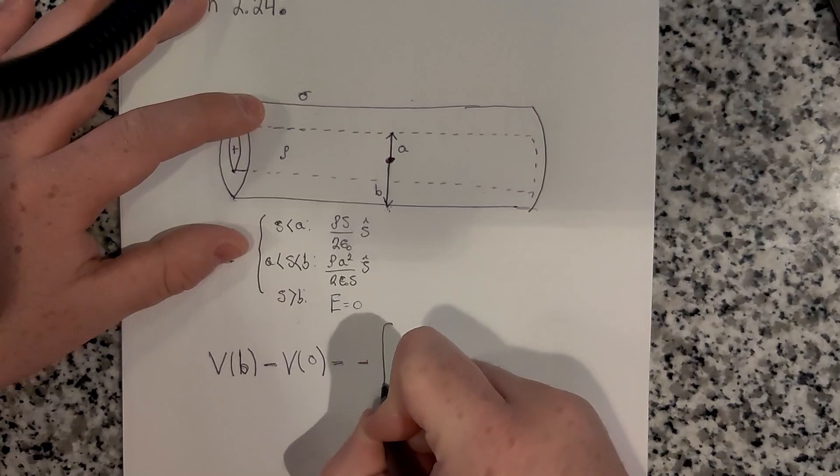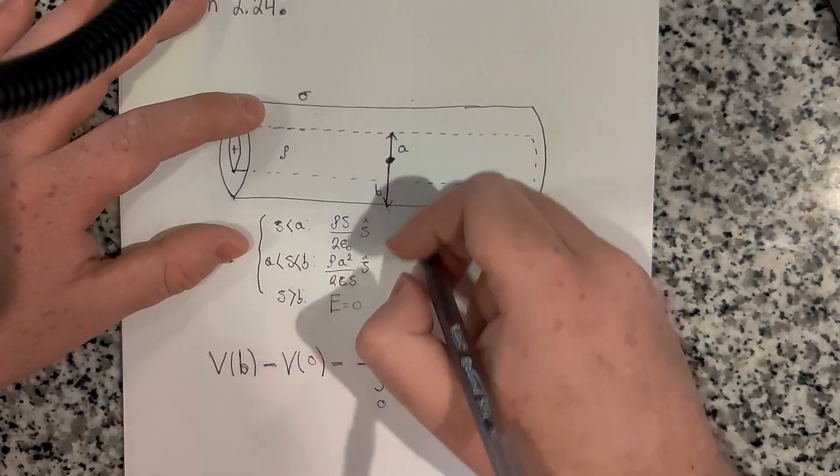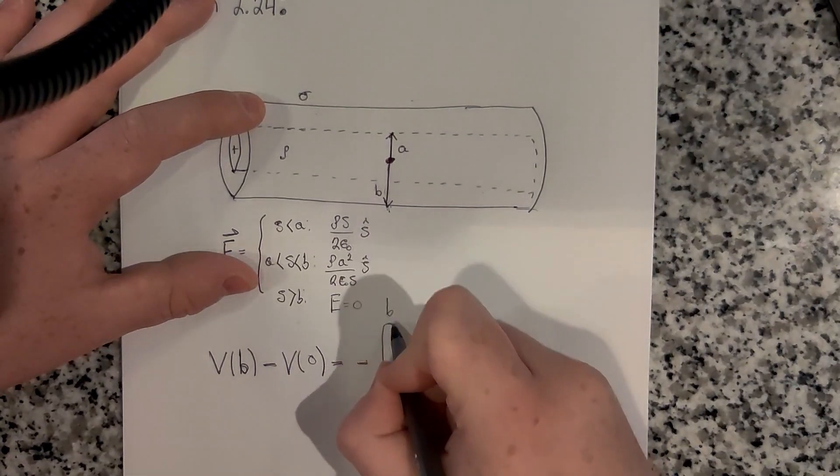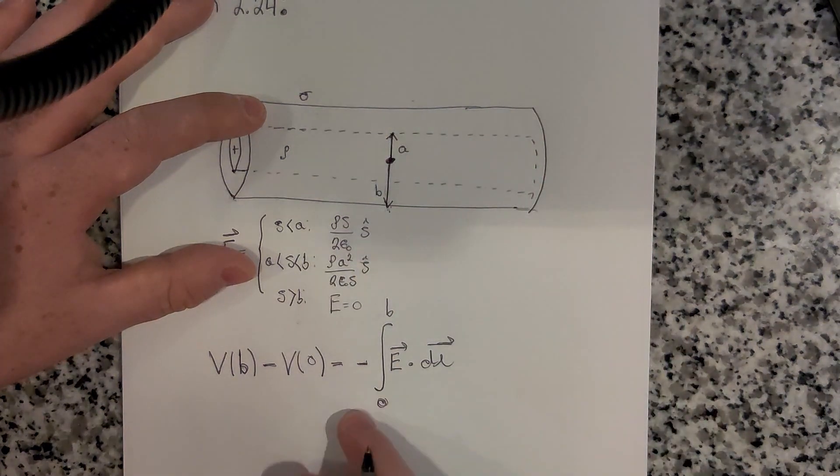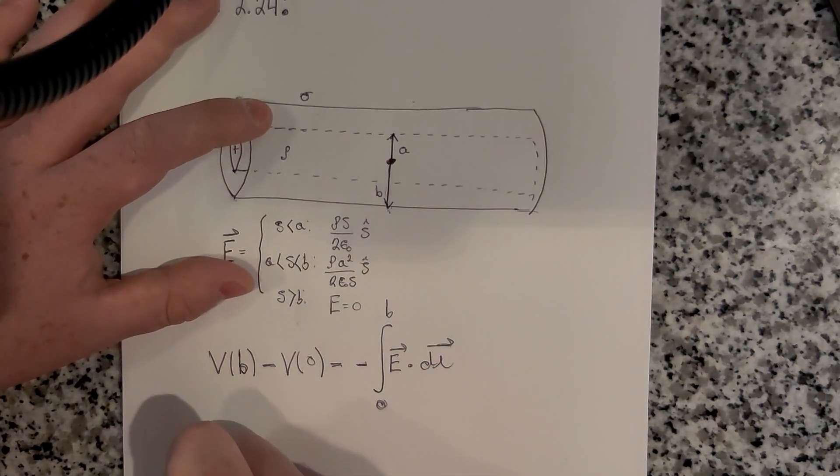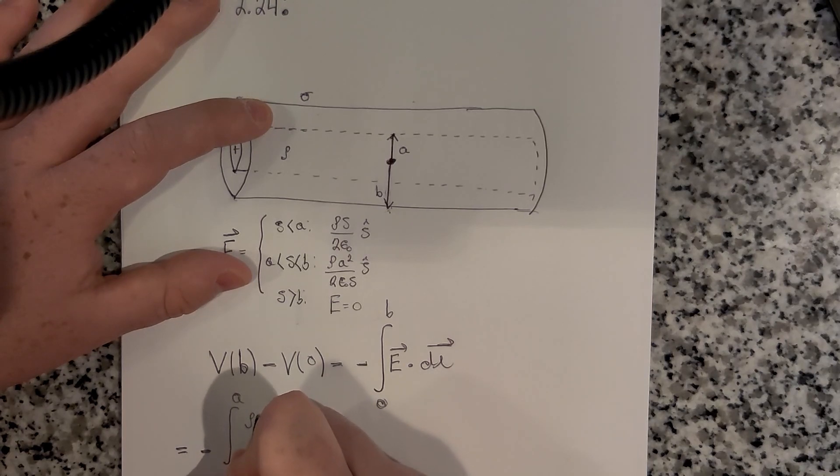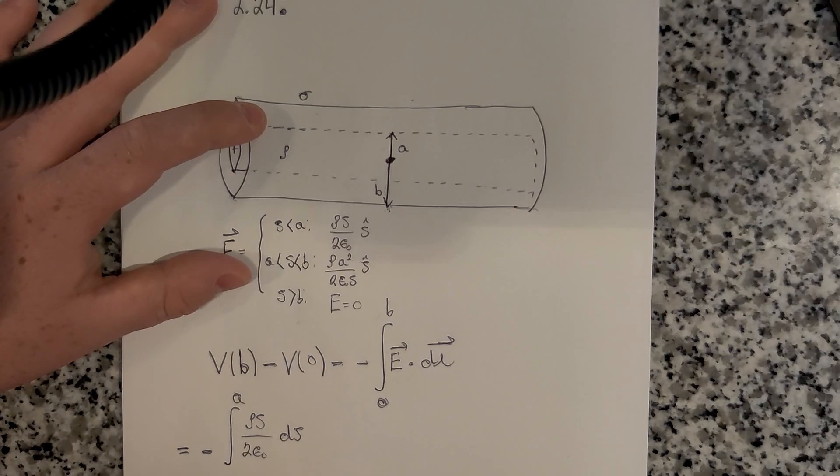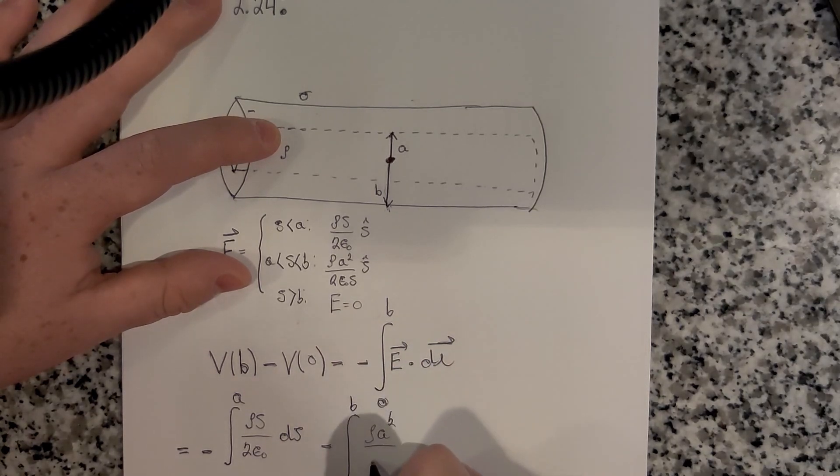So this is going to be equal to minus the integral from the center to B of E dot dL. To do this, we have to cross two different regions of two different electric fields, so this integral is going to be split up into two separate integrals. This is going to be minus the integral from the center to A, and then we use the first equation, so E dot dL becomes rho S over 2 epsilon naught dS, and then minus the integral from A to B of the second equation, rho A squared over 2 epsilon naught S dS.